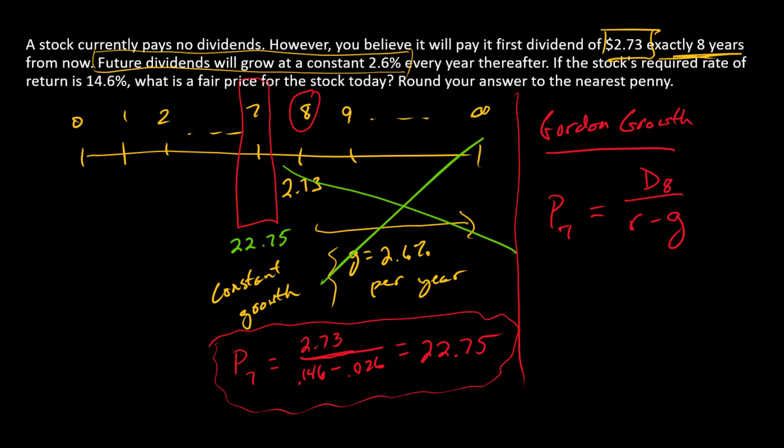And what that means is I no longer have to think about any of this stuff. All I need to think about for this stock now is a single cash flow seven periods away. And that cash flow is $22.75. So how do I solve for the price today? I'm just going to discount seven periods.